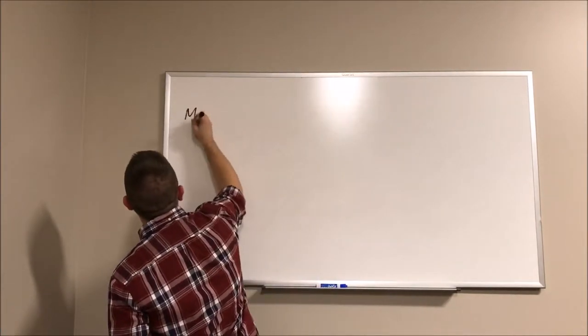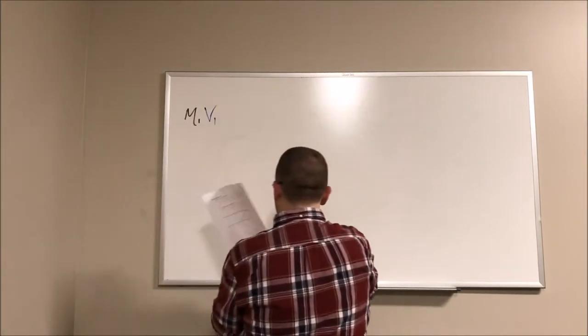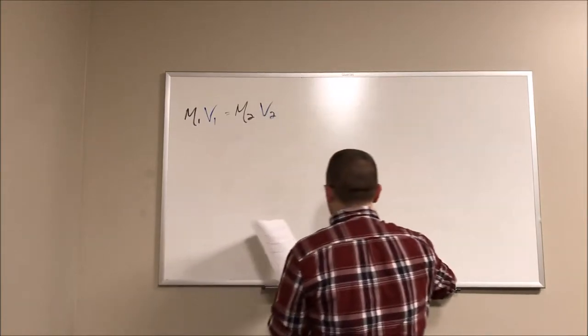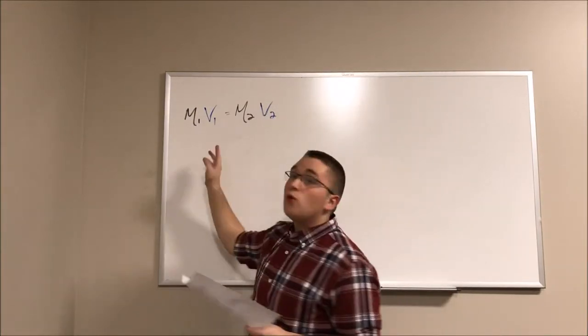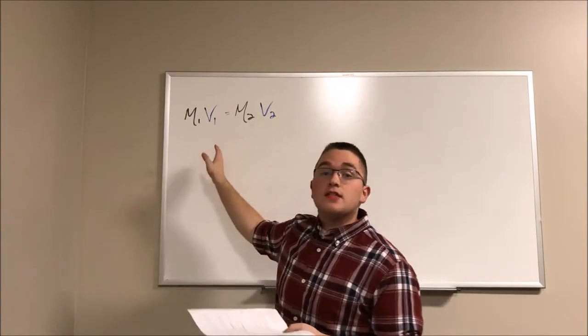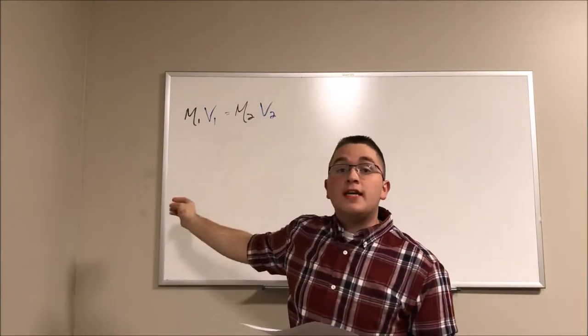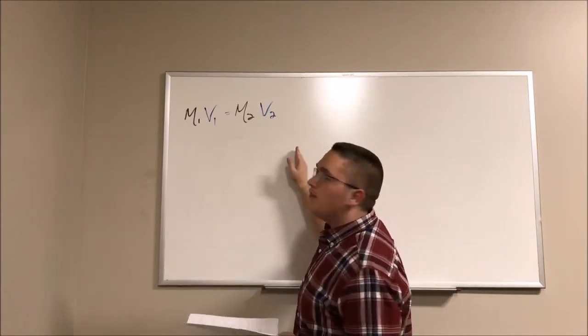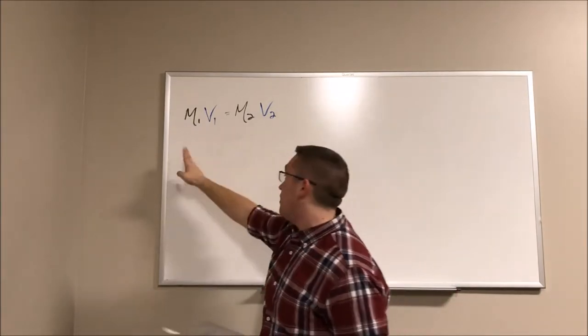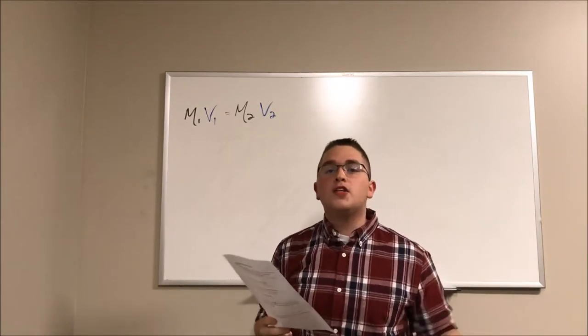So the dilution equation is defined as M1 V1 is equal to M2 V2. So M1 stands for the molarity or concentration of what we're starting off with, our original substance. V1 is equivalent to the volume of our starting solution. M2 is the molarity or concentration of what we want to end up with. And lastly, V2 is the volume of the solution that we want to have when everything is said and done. So beginning equals end of molarity and volume. That's a great way to remember that.